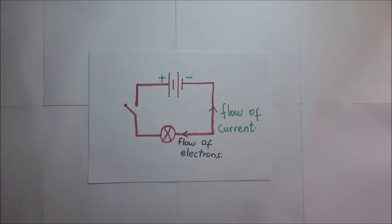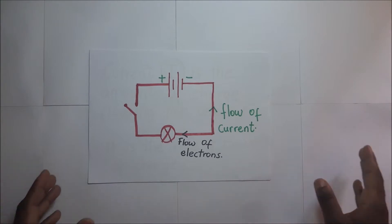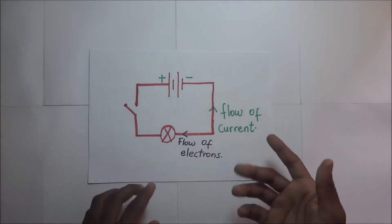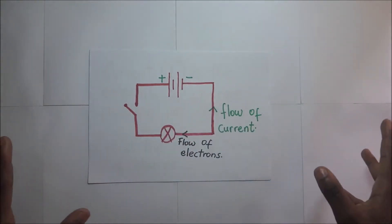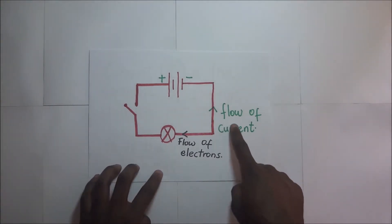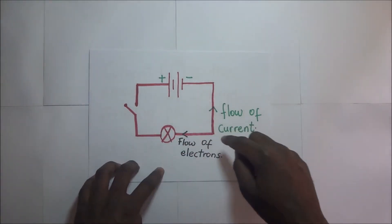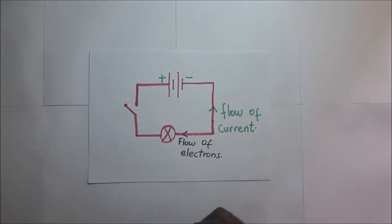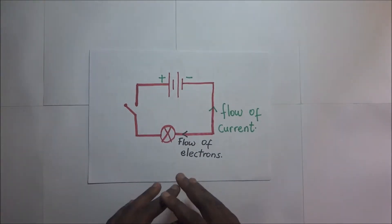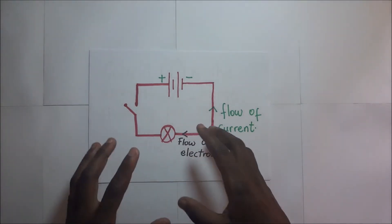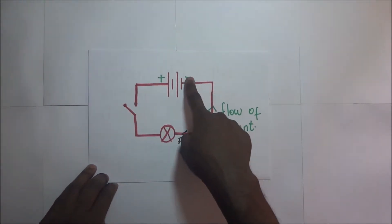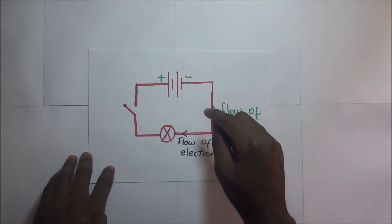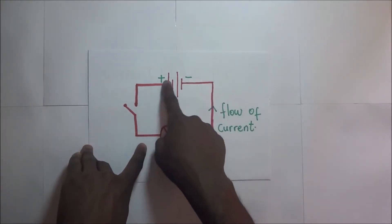The scientists of the time agreed that it is true that electrons flow from negative to positive, but conventionally they continued with the flow of current to be from positive to negative, as according to what Benjamin Franklin established. It is a generally agreed convention — that's why it's called conventional current. In actual sense, the flow is of electrons, and these electrons flow from negative to positive.